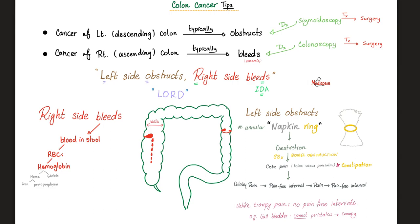Versus the right side, or ascending colon — it's very wide, so it's not going to obstruct, but it can definitely bleed, leading to loss of blood in the stool and bright red stool. When you lose blood, you get anemia. The most common cause of iron deficiency anemia in an older person is gastrointestinal bleeding, such as cancer, until proven otherwise.